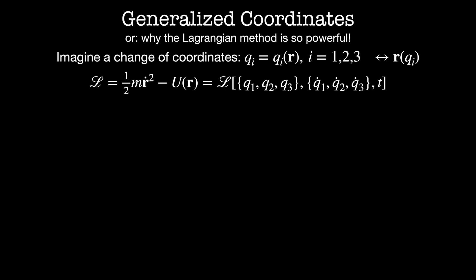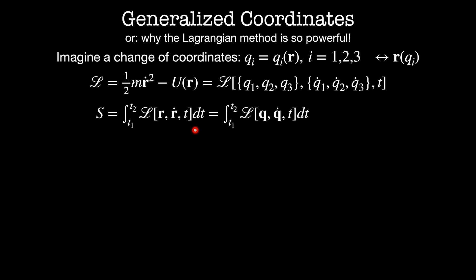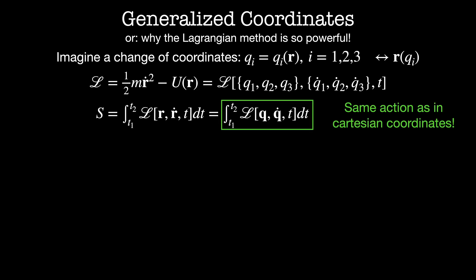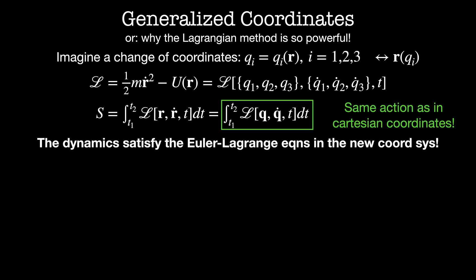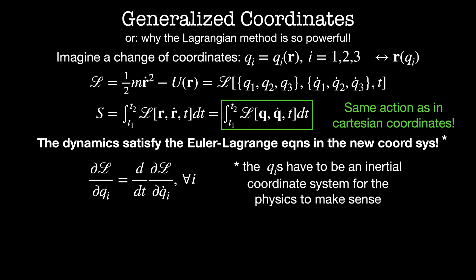Hamilton's principle states that the action for this system, whether expressed in terms of the original Cartesian coordinates or the new generalized coordinates, is going to be the same. Since the action is the same, the dynamics satisfy the Euler-Lagrange equations in the new coordinate system: dL by dq_i equals d by dt of dL by dq_i dot, for all i. One caveat is that the q_i's must form an inertial coordinate system for the physics to make sense.